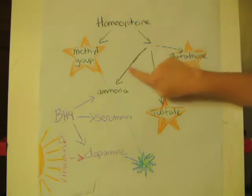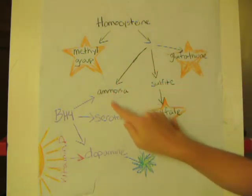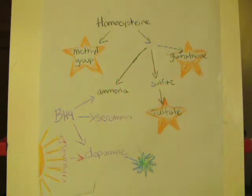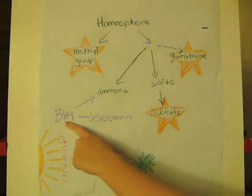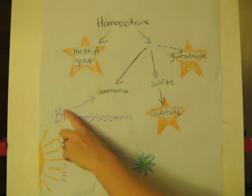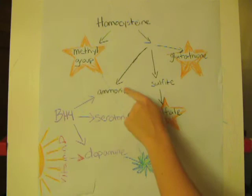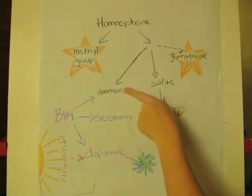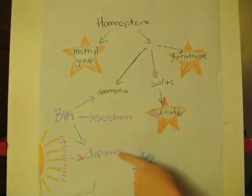And in the process it generates ammonia. Now ammonia is bad, and ammonia needs to be detoxified. It's BH4's responsibility to detoxify ammonia. BH4 is just another enzyme. Now BH4 not only detoxifies ammonia, but it also makes serotonin and dopamine.